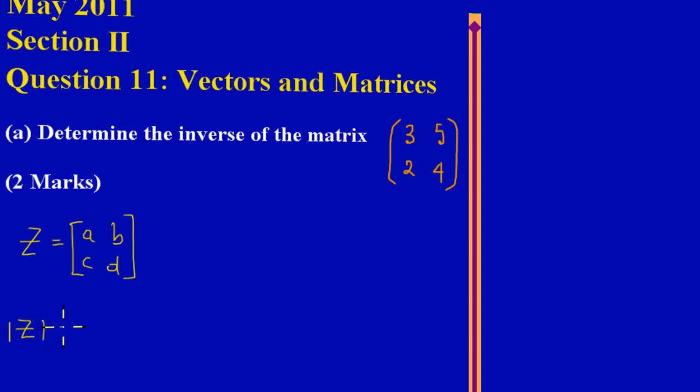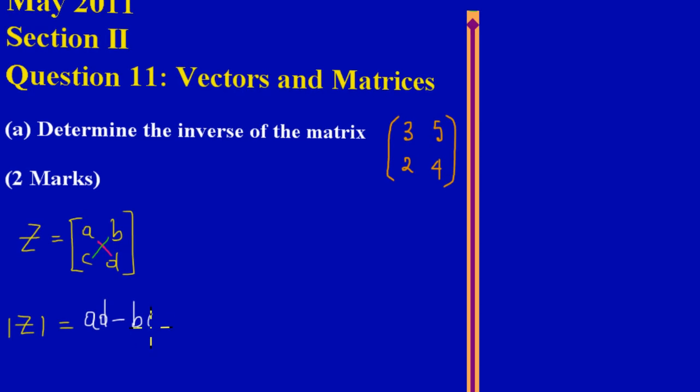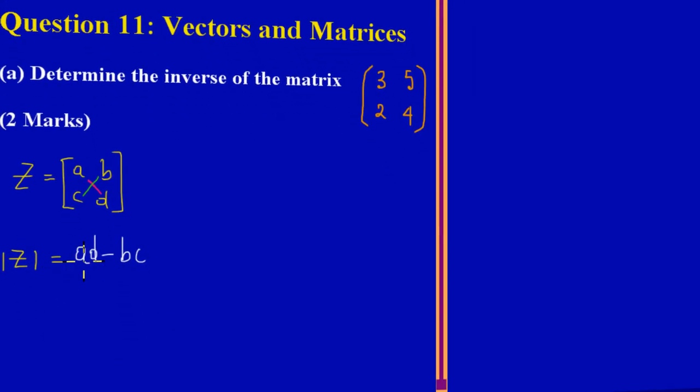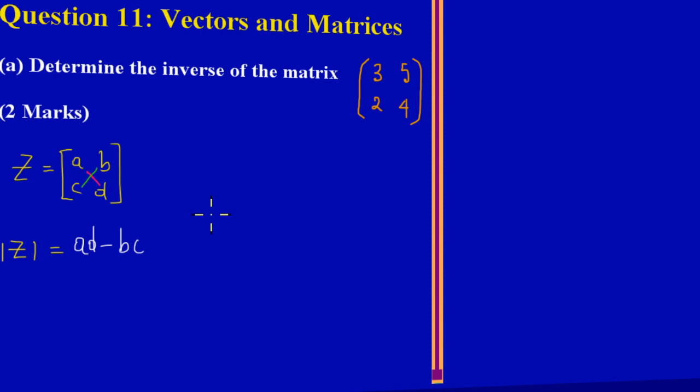The determinant: A to D would be called the leading diagonals, and B to C would be called the non-leading diagonals. To find the determinant of Z, first you would take the leading diagonal, which is A times D, and then you subtract BC from that. So that would be the determinant.